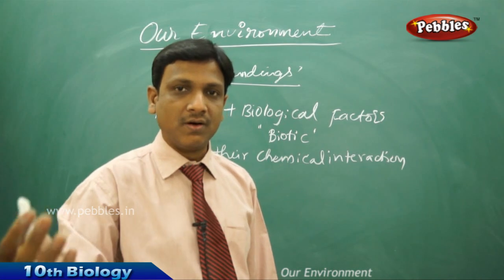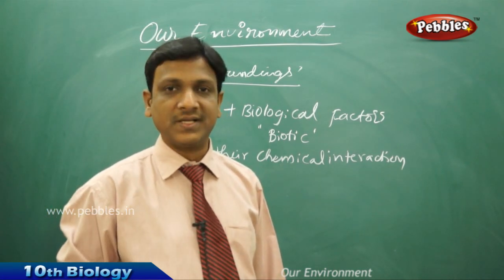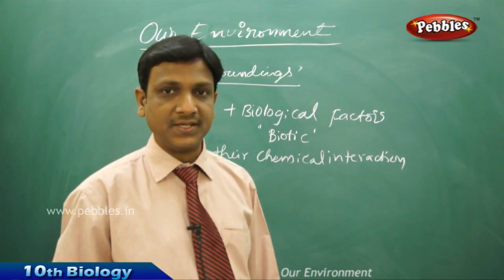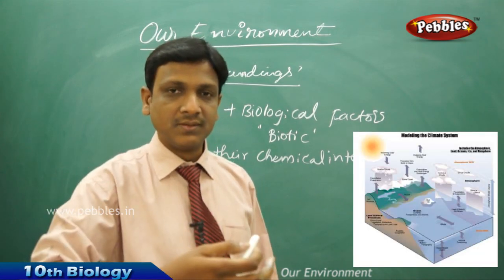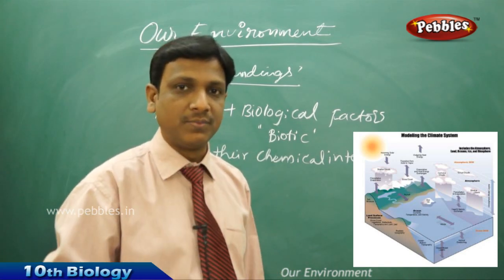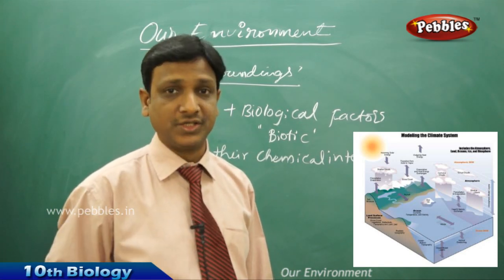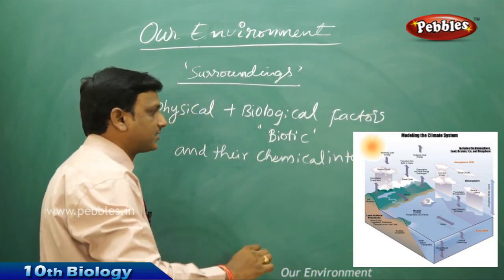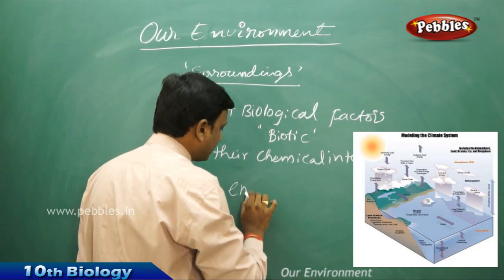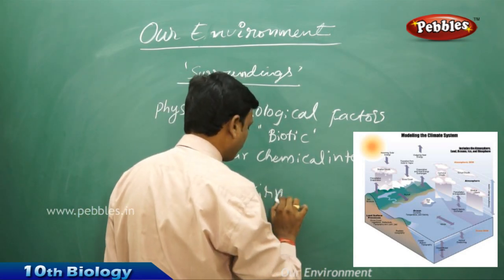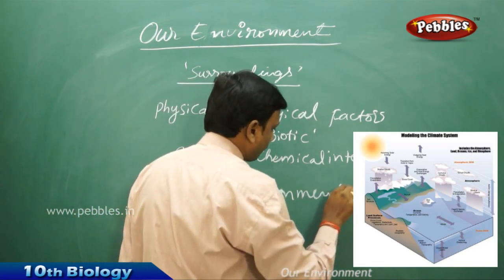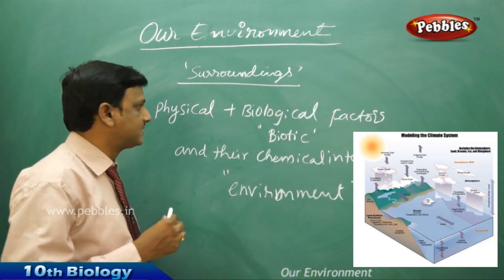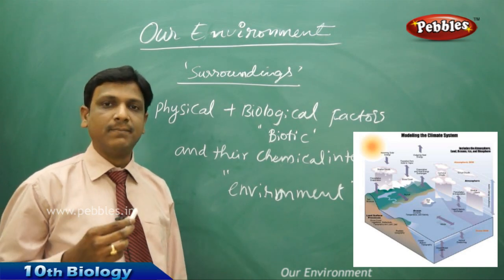What kind of chemical interaction do we observe? For example, from the atmosphere, oxygen gas is taken by humans or animals, and carbon dioxide is released into the atmosphere, which is then taken by plants. So there is some interaction between the physical component and the biological component — a chemical interaction. All together, the sum of physical and biological factors and their chemical interactions is what we call the environment.